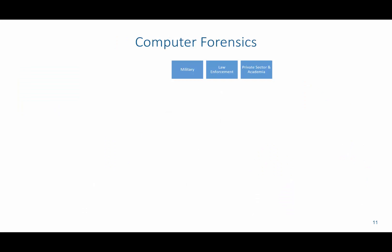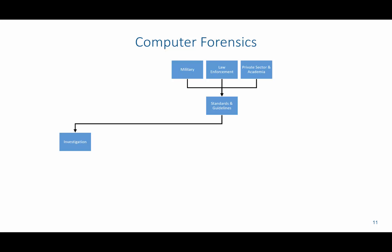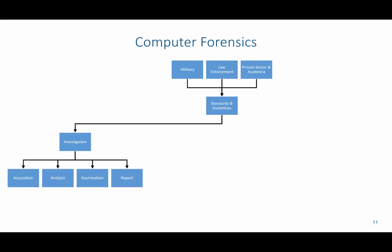In computer forensics, there are three primary areas where it takes place: military, law enforcement, and the private sector or academia. There are certain laws that govern each one of these. All three follow certain rules, standards, and guidelines as they begin their forensics practices. The key areas they focus on include investigation — which encompasses acquisition, analysis, examination, and report — as well as rules of evidence. Each type of case has different rules; for example, criminal law versus civil law have different rules from one another.